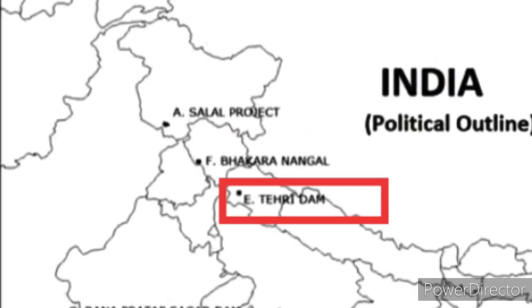The second dam is Tehri Dam. Tehri Dam is the tallest dam in India. It is situated on the Bhagirathi river near Tehri in Uttarakhand.